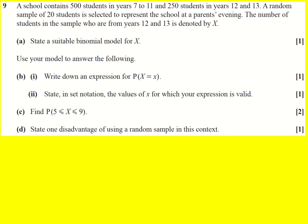The school contains 500 students in years 7 to 11, and 250 in years 12 to 13. A random sample of 20 students is selected to represent the school at the parents evening. The number of students in the sample who are from years 12 and 13 is denoted by x.